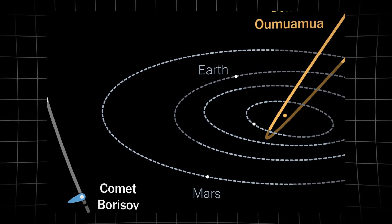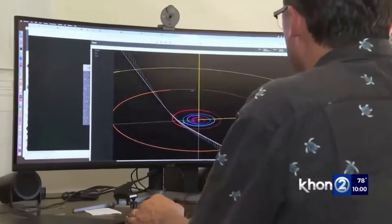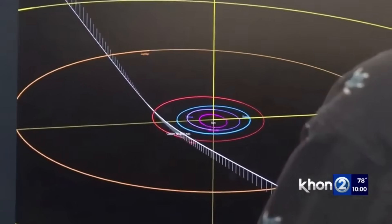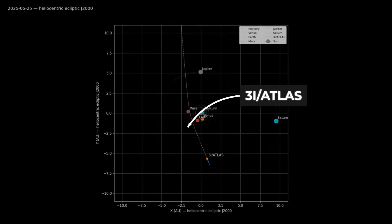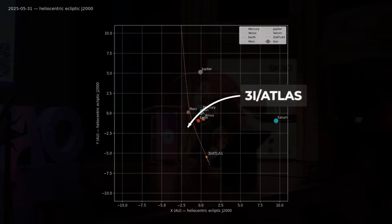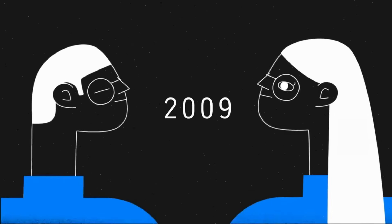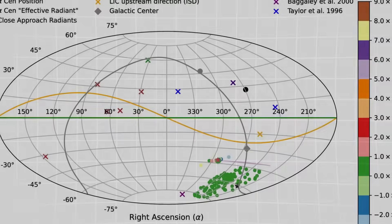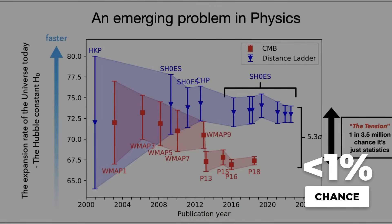But what drew the most attention was its approach angle. Unlike the previous interstellar visitors which swept in from steep, off-kilter paths, 3i-Atlas was gliding through the solar system at just 5 degrees above the ecliptic, the same flat plane where the planets orbit. This alignment is not what astronomers expect from random interstellar debris. Under basic models, an object ejected from another star system should arrive from any direction, with only a tiny chance, well under 1%, of matching the solar system's disk so closely.